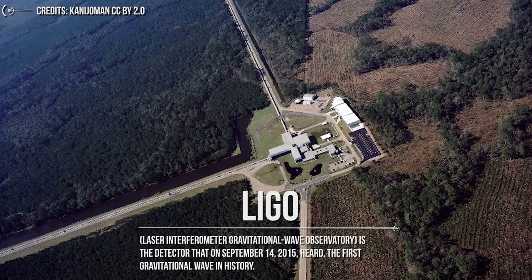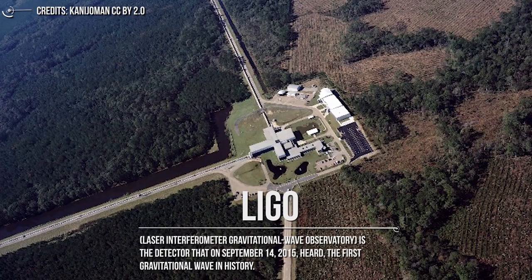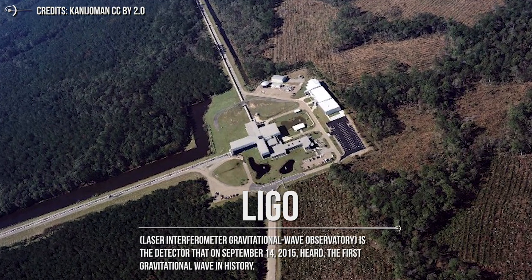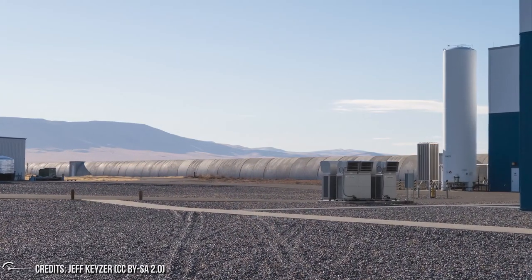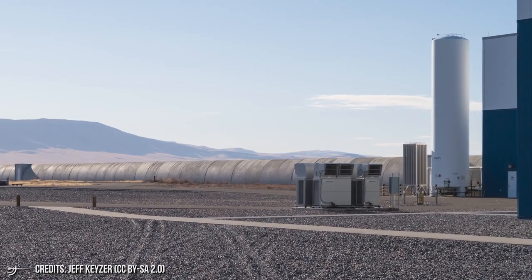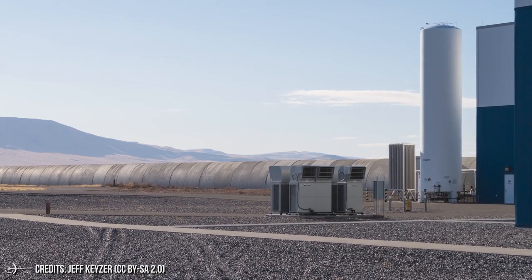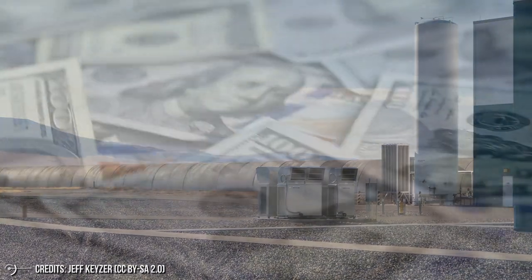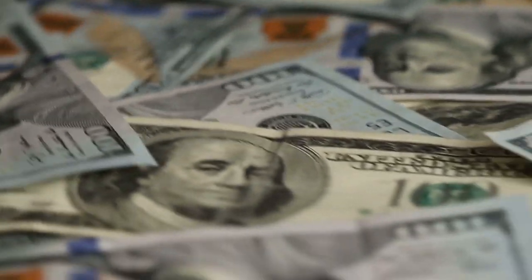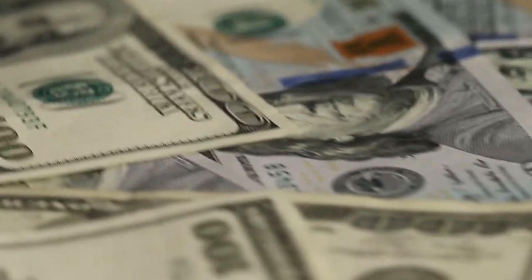LIGO, Laser Interferometer Gravitational-Wave Observatory, is the detector that on September 14, 2015, heard the first gravitational wave in history. LIGO is a project that involves scientists from Caltech and the Massachusetts Institute of Technology, MIT in Boston. The initial phase of its construction, finished in 1999, cost $365 million and is the largest and most ambitious project ever funded by the U.S. National Science Foundation.